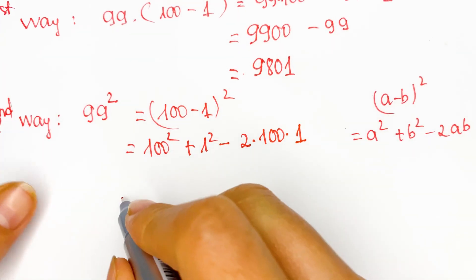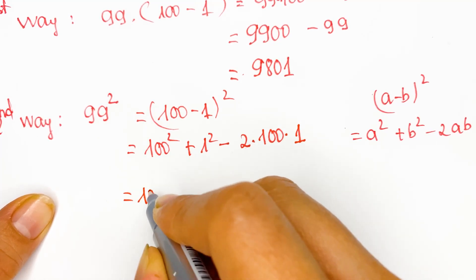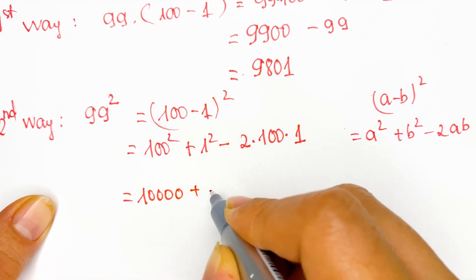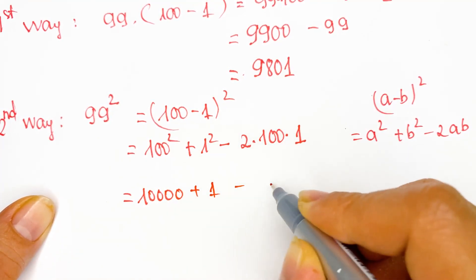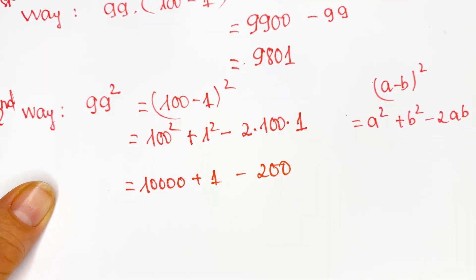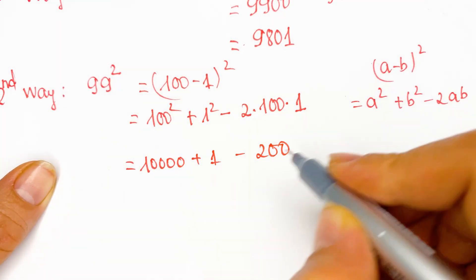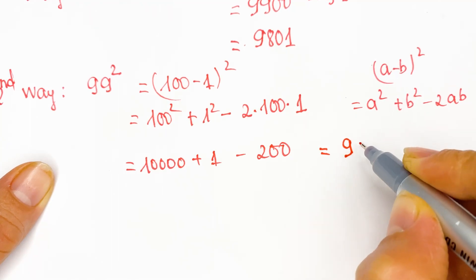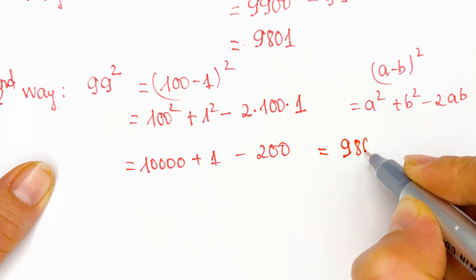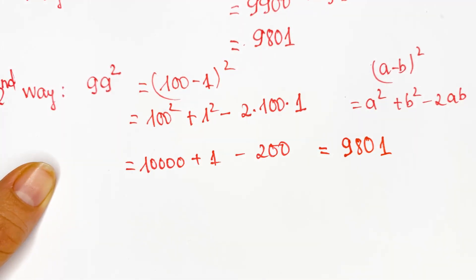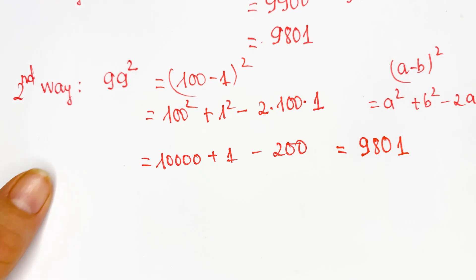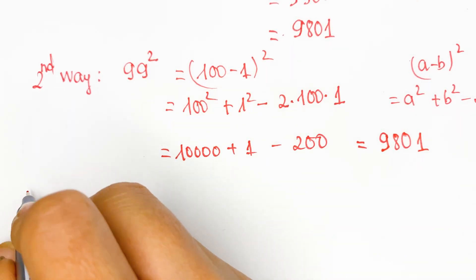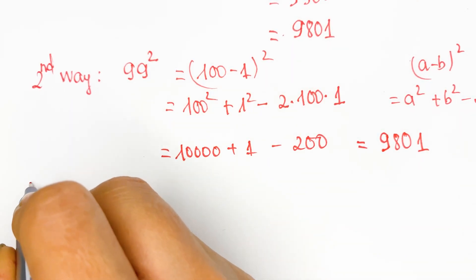And then we have 10,000 plus 1 minus 200, and then we have the answer: 9,801. Now we move to the third method.